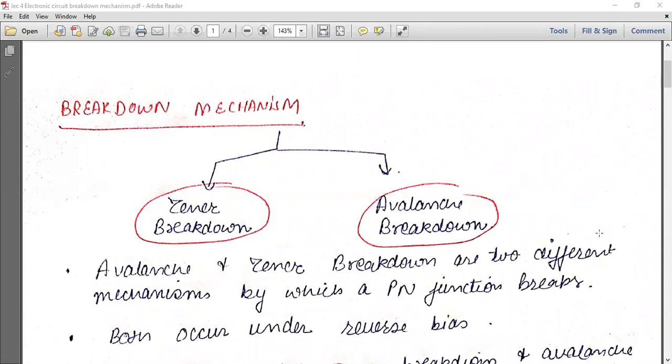As we see, breakdown mechanism only occurs in reverse biasing, and there are two types of breakdown mechanisms. One is zener breakdown and another one is avalanche breakdown. So avalanche and zener breakdown are two different mechanisms by which a PN junction breaks.